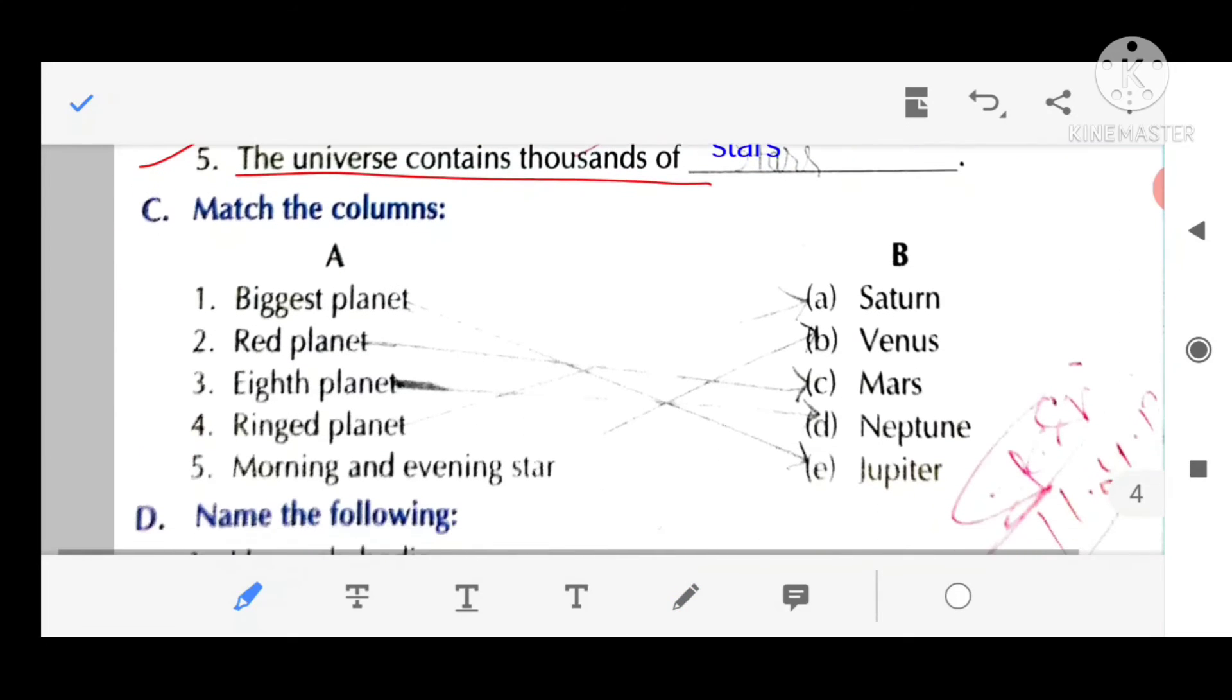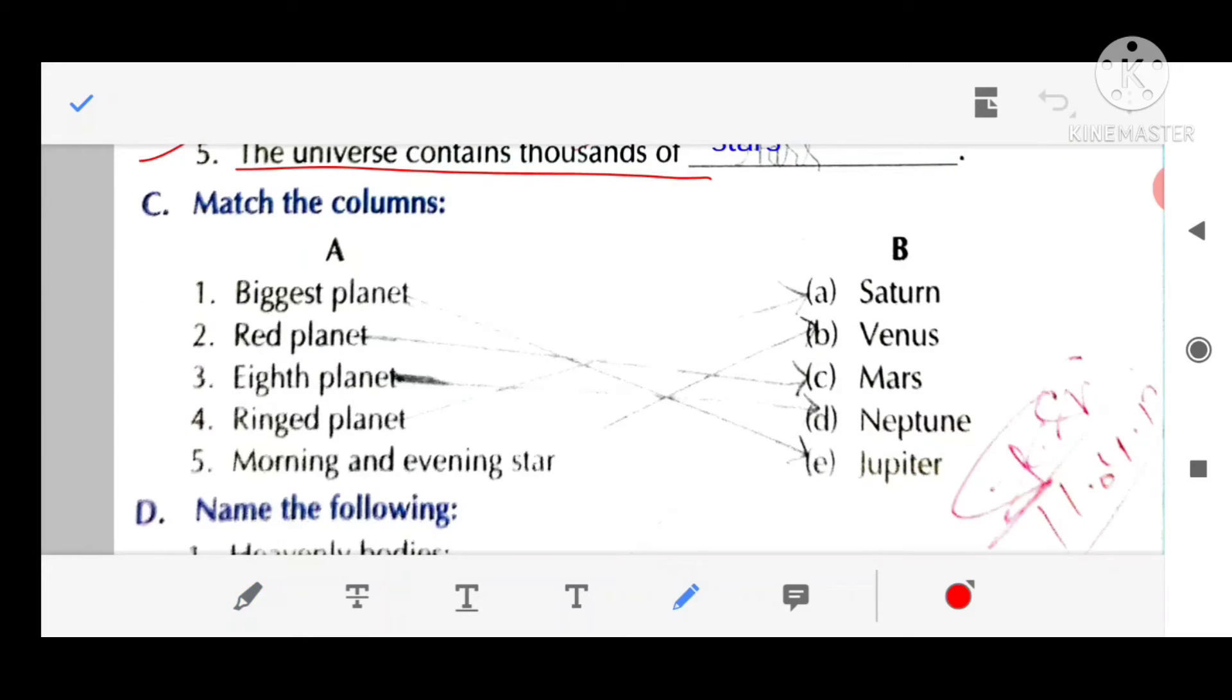Match the column. Biggest planet, Jupiter. Red planet, Mars. Eighth planet, Neptune. Ringed planet, Saturn. Morning and evening star, Venus.